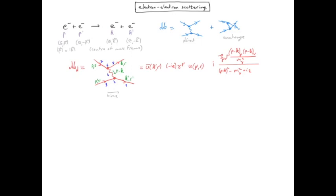Then in five, we have a u bar. In six, we have the vertex. And in seven, we have u for the momentum p and spin s.